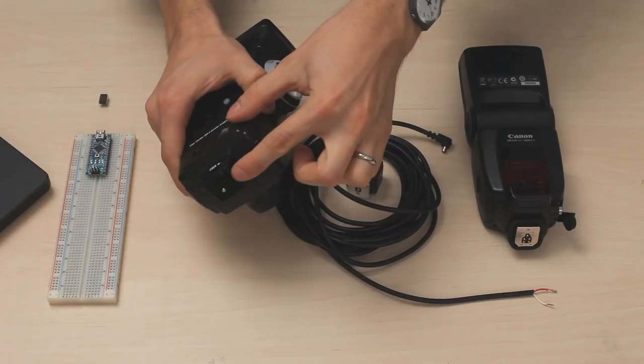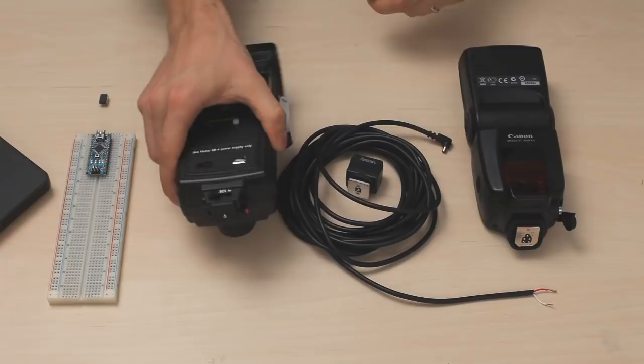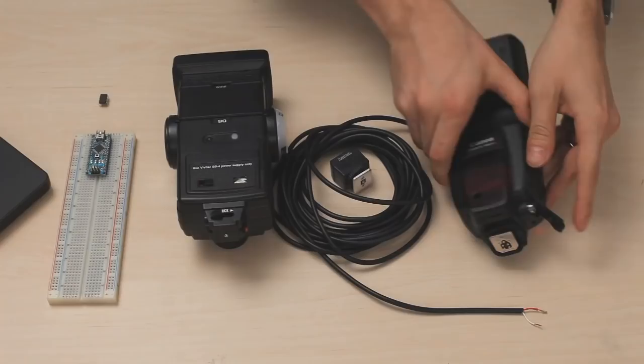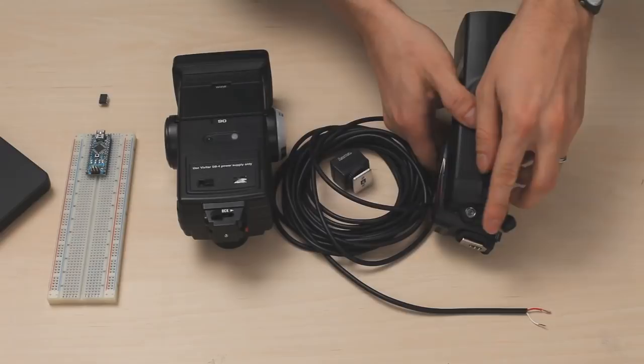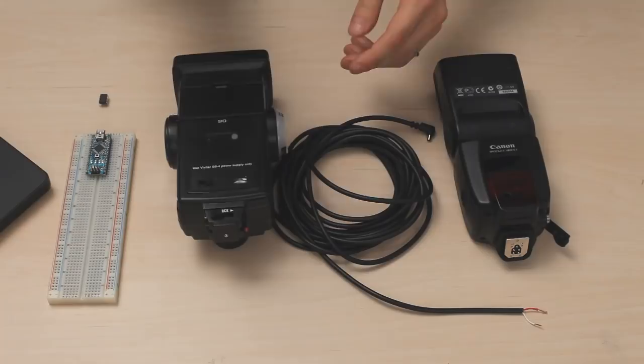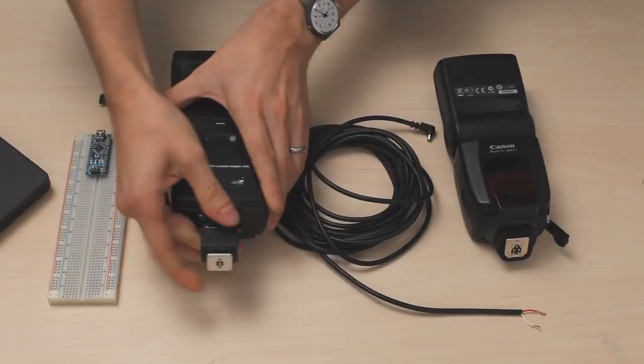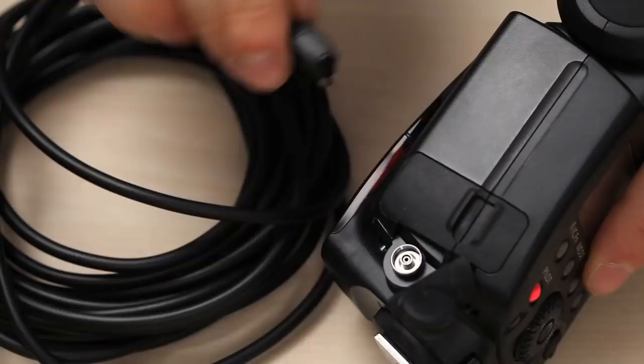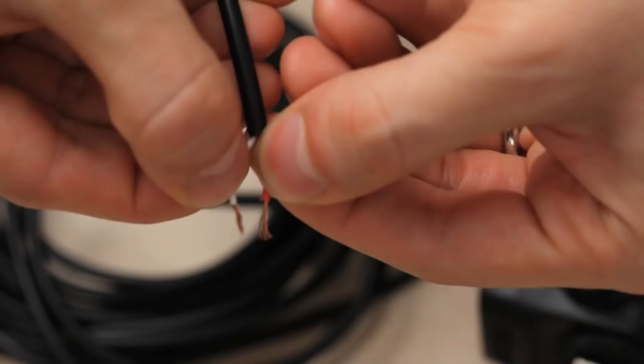Some flashes like this one have a built-in PC sync port, which looks like this. But you can make any hot shoe flash PC sync capable if you use a hot shoe adapter. Hot shoe adapters and PC sync cables are very cheap and are available at many pro photo shops, or you can check out flashzebra.com for a nice selection. I'm going to plug my PC sync cable directly into this flash, and as you can see, when I connect the leads, the flash fires.